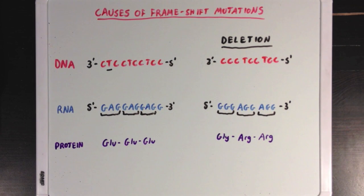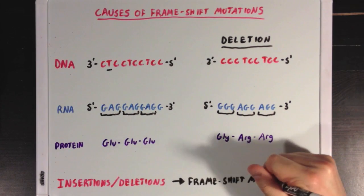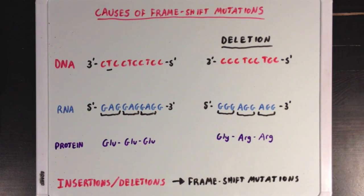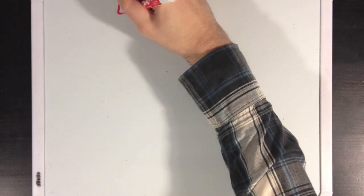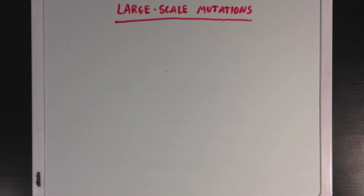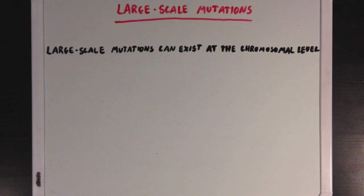So overall, insertions and deletions can both lead to frameshift mutations. Now, we can also talk about large-scale mutations, which, instead of being at the level of individual nucleotides, are usually seen at the chromosomal level, and can affect many genes instead of just a few base pairs.